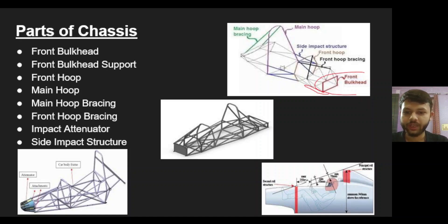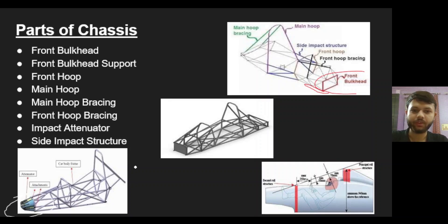Then we have the front and the main hoop bracing. These support both the roll hoops, not allowing them to deform. The next is the impact attenuator. Impact attenuator is not actually a chassis part but yet it plays a major role. It is basically placed ahead of the front bulkhead and its role is to absorb the energy in case of impact. It has a foam-like structure that absorbs and dissipates the kinetic energy of the vehicle during a crash. The last one is the side impact structure. As the name suggests, it protects the driver during a side impact crash.